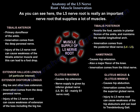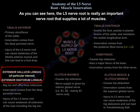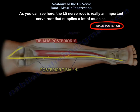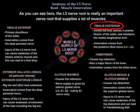As you can see, the L5 nerve root is really an important nerve root that supplies a lot of muscles. Here is a summary: The tibialis anterior is the primary dorsiflexor of the ankle, innervated by the deep peroneal nerve — injury to L5 will cause foot drop. The extensor hallucis longus and extensor digitorum longus cause big toe and other toe extension, also innervated by the deep peroneal nerve — injury to L5 causes weakness of toe extension. The tibialis posterior inverts the foot, assists in plantar flexion, and maintains the medial longitudinal arch, innervated by the posterior tibial nerve. The hamstrings cause hip extension and are a major flexor of the knee, innervated by the tibial nerve.